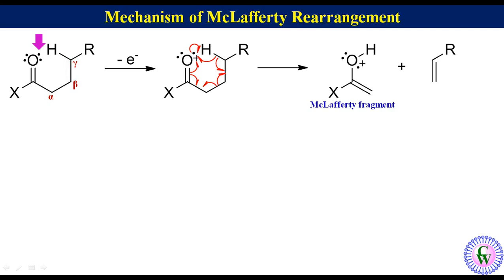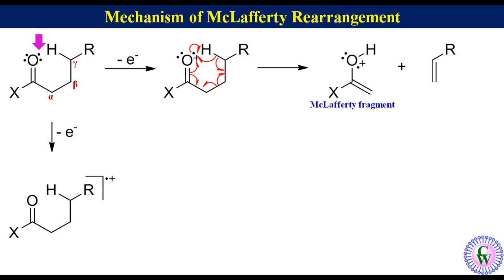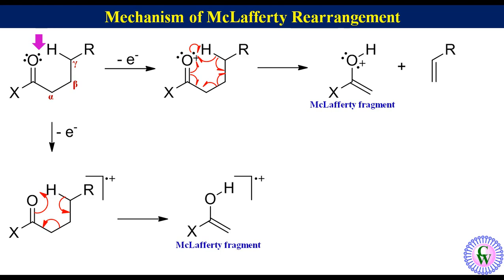There is one more way of representing the radical cation and finding the McLafferty fragment. To draw the radical cation formed after removal of one electron from the molecule, just draw the original molecule, put an inverted L, then a radical and positive charge. Gamma proton abstraction, formation of a pi bond between beta and gamma carbon, breaking of the sigma bond between alpha and beta carbon, and formation of a pi bond between alpha and carbonyl carbon leads to the generation of the McLafferty fragment and alkene. These are the two mechanisms for generation of the McLafferty fragment and its representation.